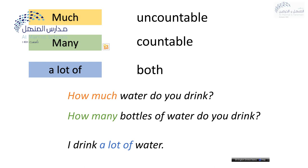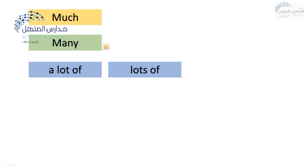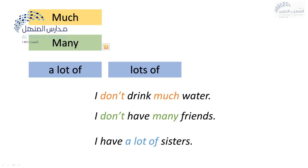But we cannot count water. The third example — a lot of. I can say I drank a lot of water and I drank lots of water. We can say a lot of or lots of — they are both the same. Look at these examples: I don't drink much water; I don't have many friends; I can use a lot of with sisters.